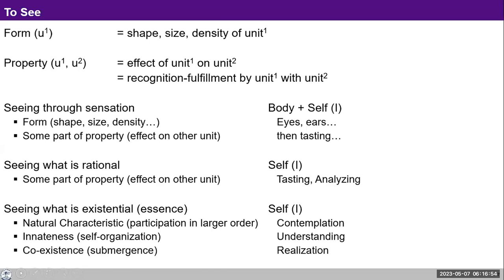But then there is a lot that is deeper — what we are calling the essence of any unit. This only involves the self. The body is involved only when we are seeing through sensation; the rest is all through the self directly. For the thinking, analyzing part, you don't really need inputs from the body — you can do this within the self. And when it comes to the essence part — the part that is unchanging, the part that is universal — you don't need the body either. Within the self, as the activities of contemplation, understanding, and realization get activated, I am able to see more and more of this essence of any unit.